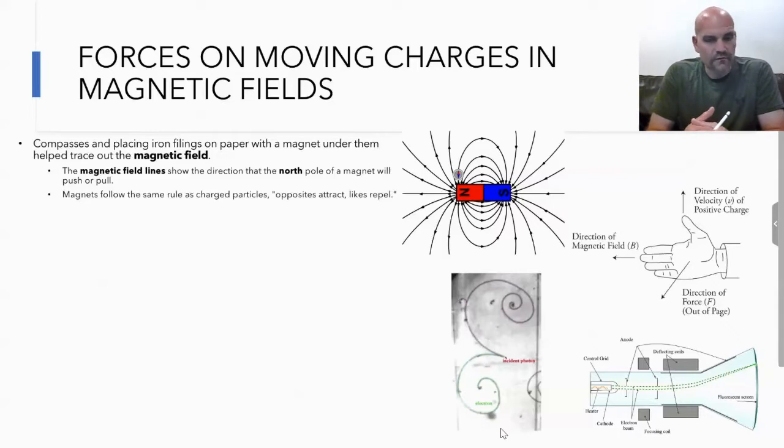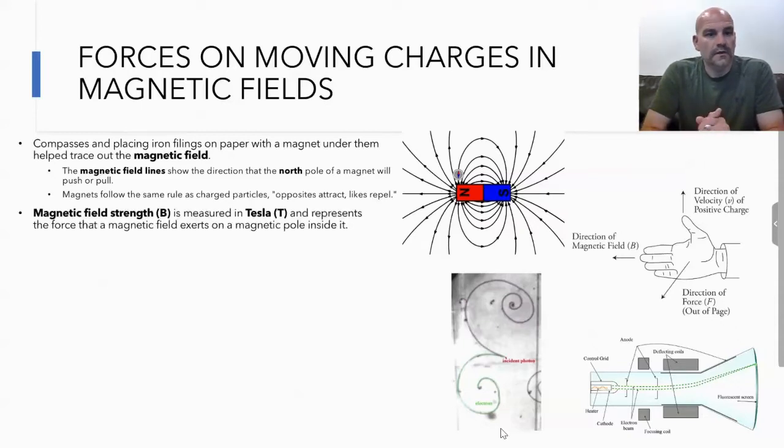To determine the magnetic field strength, it's measured in Tesla, and this represents the force that a magnetic field exerts on a magnetic pole inside of it. There's a parallel between electric fields and magnetic fields. When we talked about electric field strength, it's like we brought a test charge into that electric field, and the field strength would be what it feels when it's in that electric field.